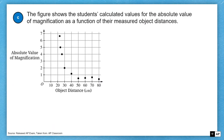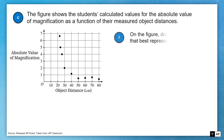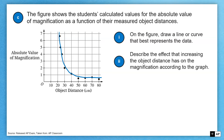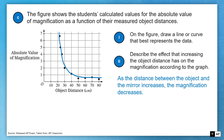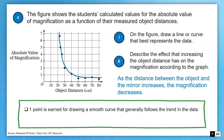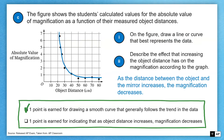In part C, we're given a figure showing the students' calculated values for the absolute value of magnification as a function of measured object distances. First, draw a line or curve that best represents the data. It doesn't look like a line, so it must be a curve — it looks like it has a horizontal and a vertical asymptote. Then describe the effect of increasing object distance on magnification: as the distance between the object and the mirror increases, the magnification decreases. We earn one point for the smooth best-fit curve and one point for identifying the decreasing trend.